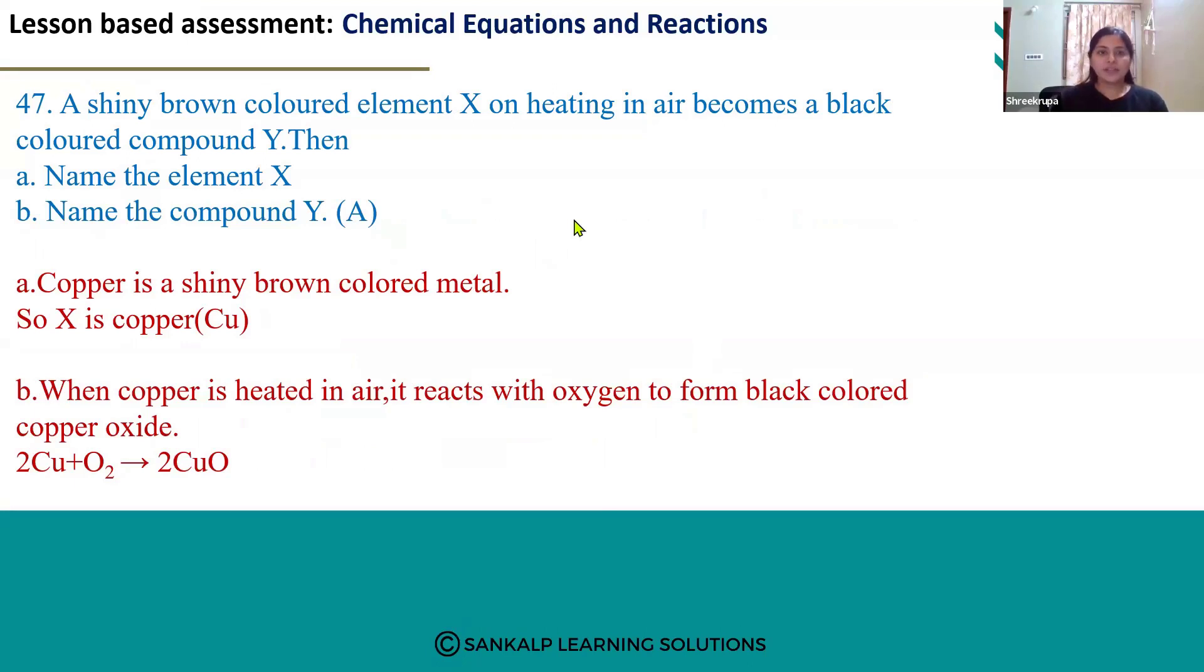Hello everyone. Let's look at the 47th question. A shiny brown colored element X on heating in air becomes a black colored compound Y. Then name the element X and compound Y.